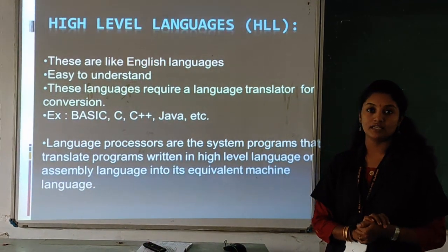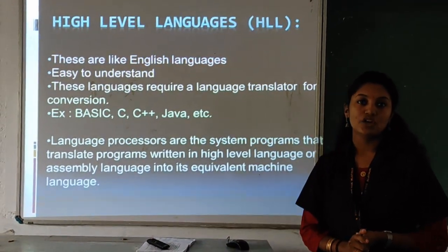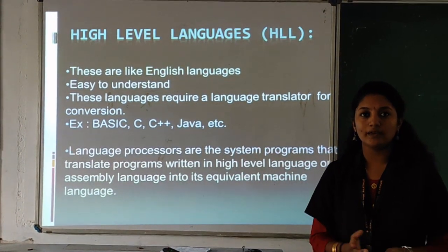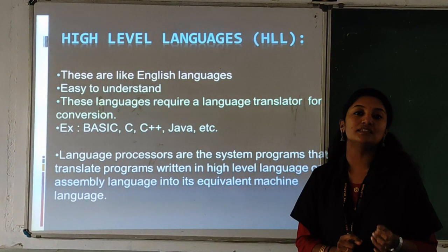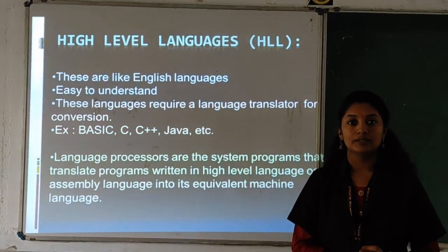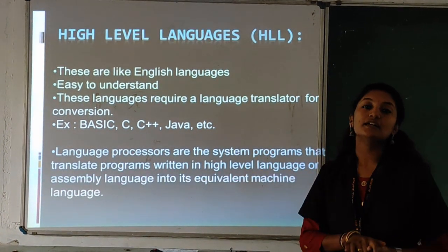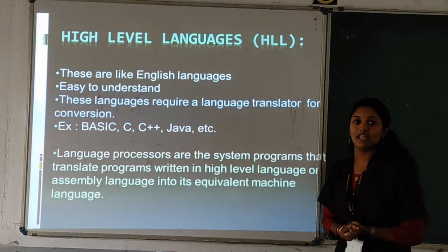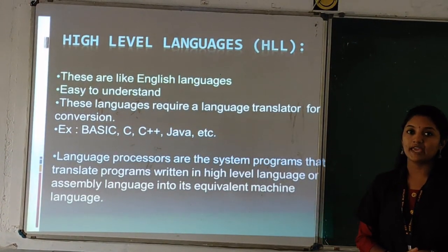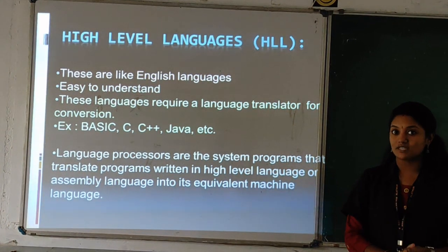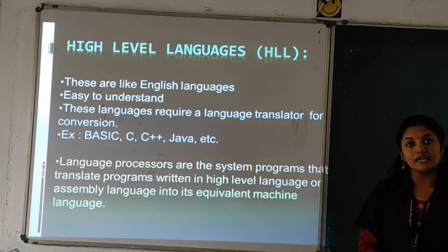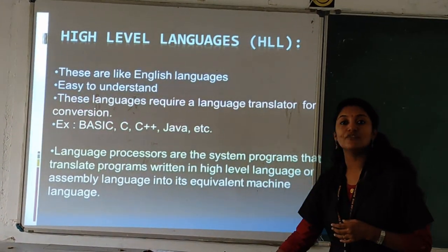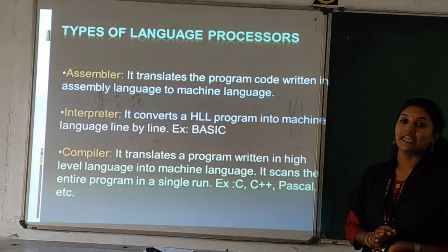Next is high-level language. It is like English language, so it is really easy to understand. But the computer doesn't understand this language. It requires a translator to convert the high-level language to machine-understandable language. Examples of high-level languages: Basic, C, C++, Java, etc. Language processors are translators which convert the high-level language to machine-understandable language. There are three types: assembler, interpreter, and compiler.